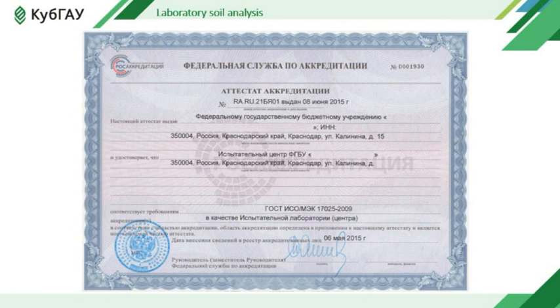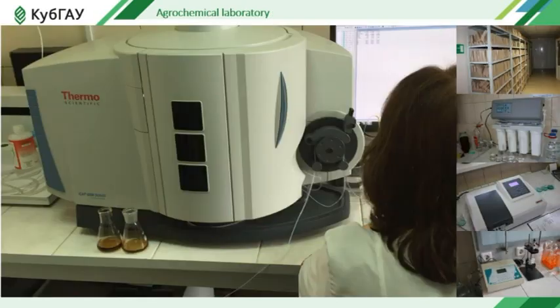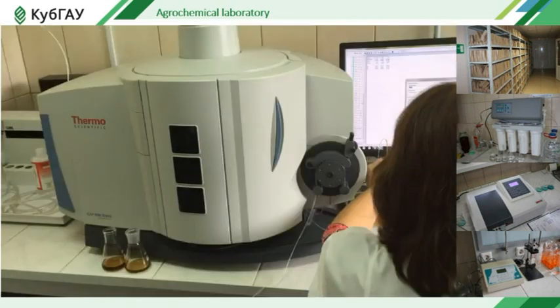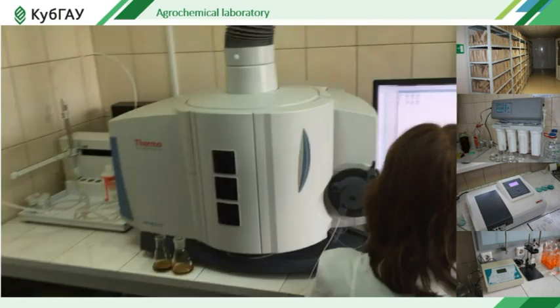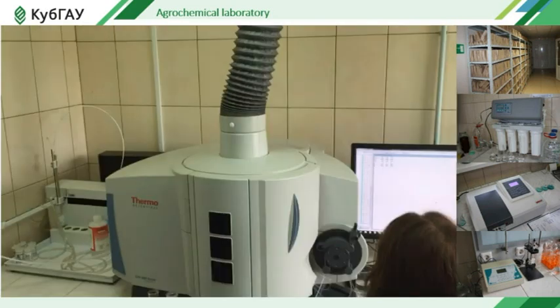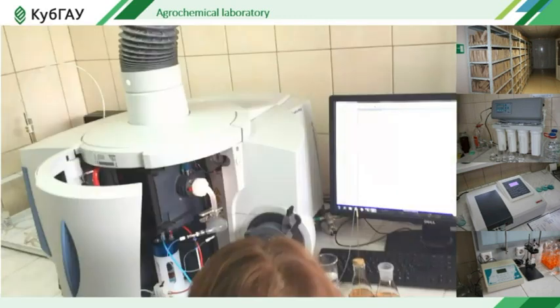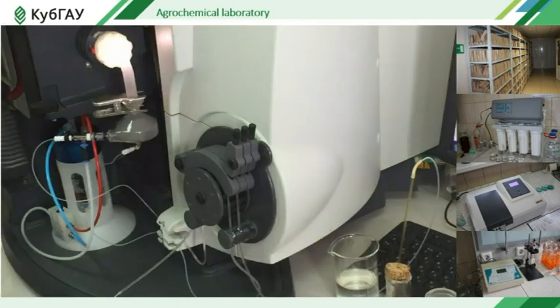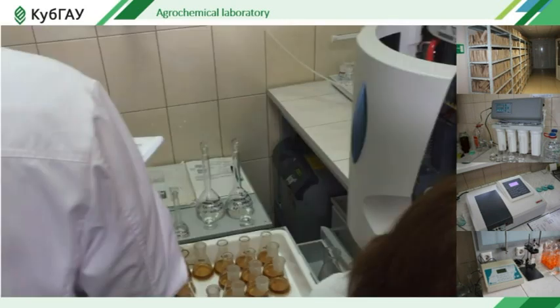Laboratory soil analysis: selected and labeled samples are delivered to the agrochemical laboratory accredited in accordance with GOST or ISO for analysis. The list of parameters determined in the laboratory includes the whole range of indicators necessary for assessing the degree of soil supply with plant nutrition elements — for example, magnesium, boron, sulfur, hydrogen index, cation exchange capacity, etc. Nowadays, laboratories have high-precision analytical equipment which increases the accuracy of measurements by several times.